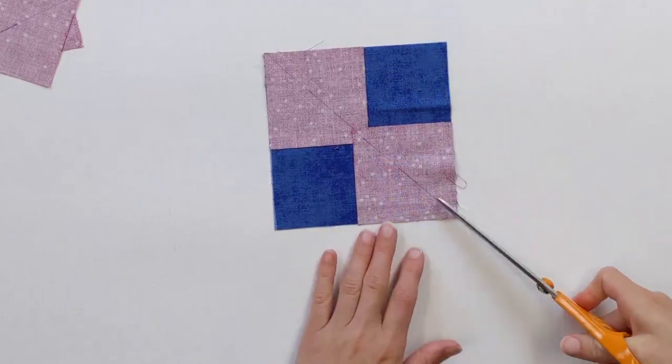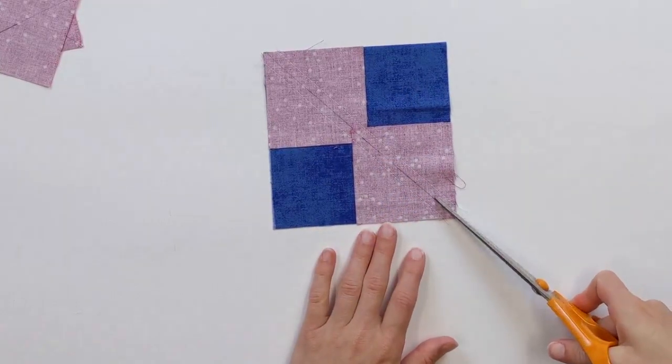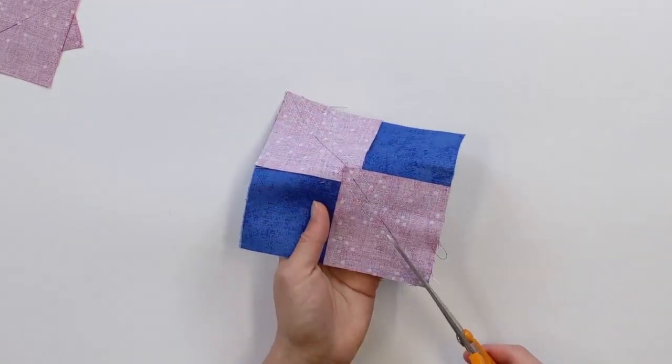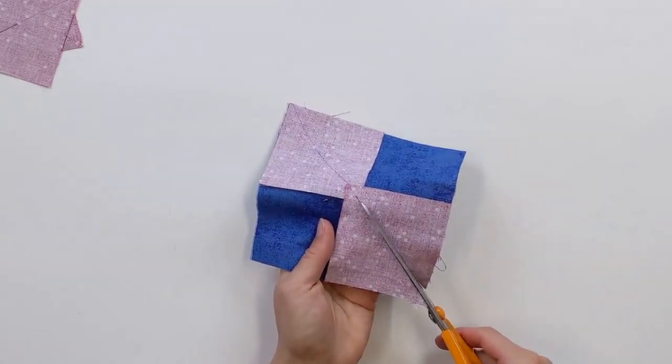Now we're going to take our scissors, and we're going to cut on the line that we drew. You can also use your rotary cutter for this. But I just, I always have scissors handy near my sewing machine. So I just go ahead and cut them apart.